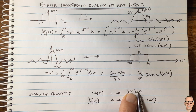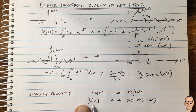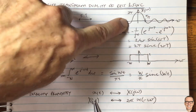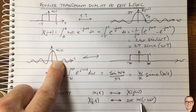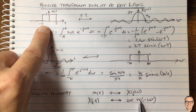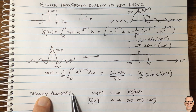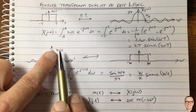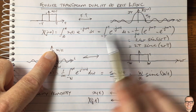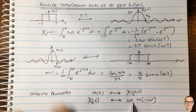To state it again: if you have a function pairing where a certain shape in the time domain transforms to another shape in the frequency domain, then if you put that second shape into the time domain, its Fourier transform will have the first shape in the frequency domain. There is also a scaling factor of 2π that comes in when you match up these two results, which makes sense and can be worked through.